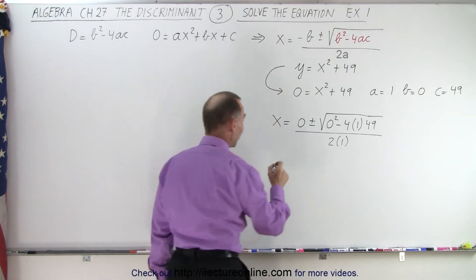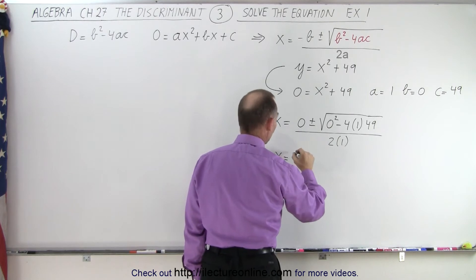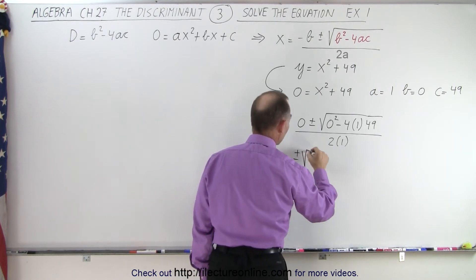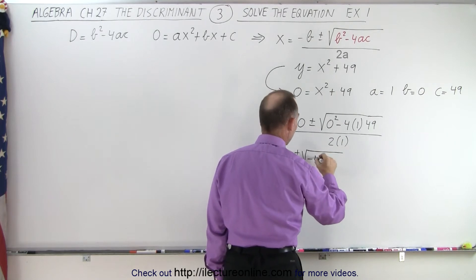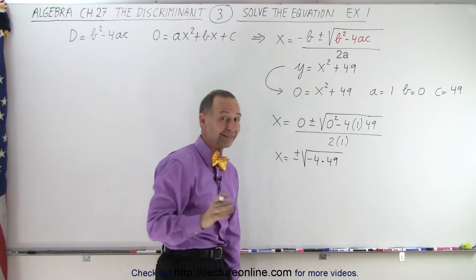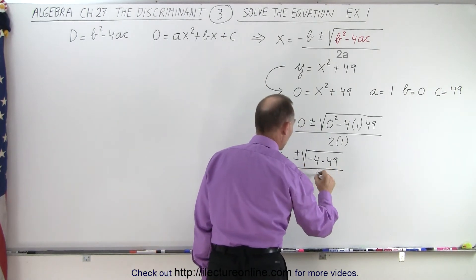Simplifying that, we get x = (± √(-4 × 49))/2. I'll leave it as minus 4 times 49 because that makes it easier to take the root.